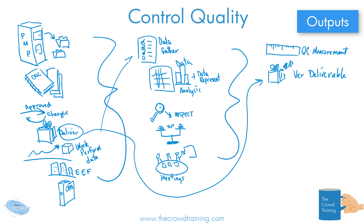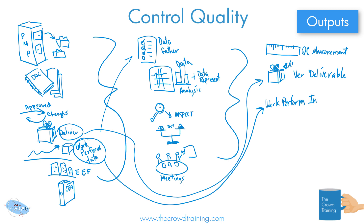Here we had the work performance data, but as it's gone through our thinking, analysis, and gathering, we now have it not as just raw data but in some format of information. So I'll just say 'info' — maybe it's a nice little chart or presentation we've made. Also, sometimes, whether it's approved changes that have come through and we find out that doesn't work, or as we inspect things, we've got to change things — this is where we make those requests for change. And it will go through the change control procedures in the perform integrated change control process.